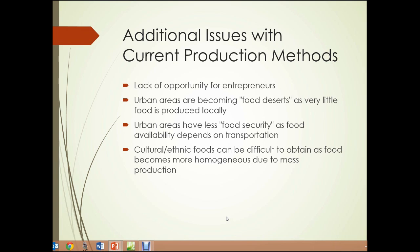Urban areas also have less food security, as food availability depends on the transportation system. Disrupt the transportation system and food stops coming in. In an average urban grocery store, there's enough food to feed the population that depends on that store for only a few days, and those stores are constantly re-supplied. It's difficult to have food security when you're as dependent on a transportation system as urban areas are. Finally, cultural and ethnic foods can be difficult to obtain as food becomes more homogenous due to mass production.